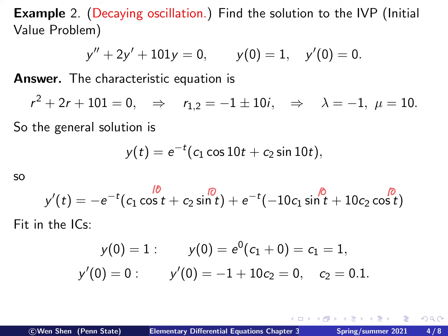Applying y(0) = 1: the exponential is 1, sin(0) = 0, cos(0) = 1, so we get c1 = 1. Applying y'(0) = 0: we get −c1 + 10c2 = 0, and since c1 = 1 this gives −1 + 10c2 = 0, so c2 = 0.1.